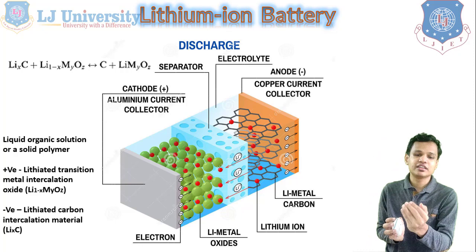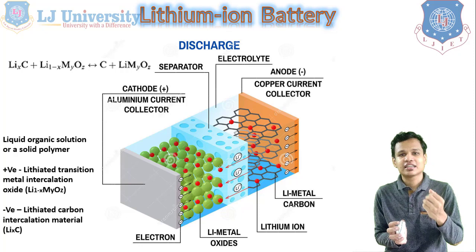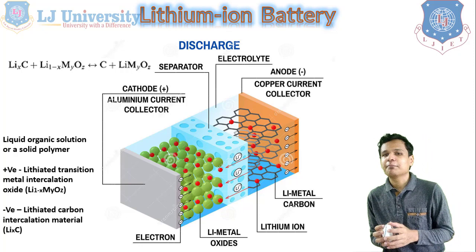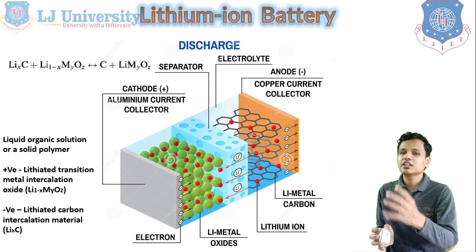In the positive electrode, Li(1-x) is used; in the negative electrode, LixC is used. At the positive electrode, we require a current collector that is kept as aluminum, and at the negative electrode, we have copper as the current collector. The current collector will be there in almost all batteries, and different materials will be used for the current collector depending on the requirement.